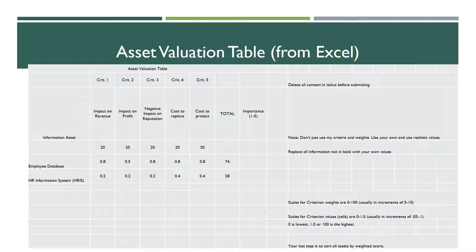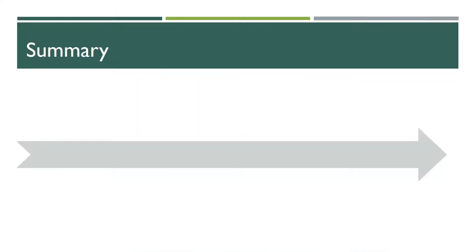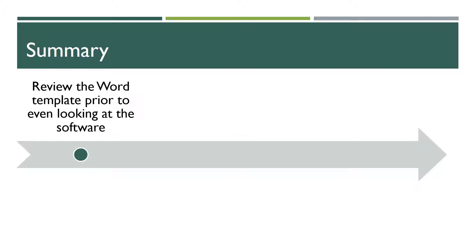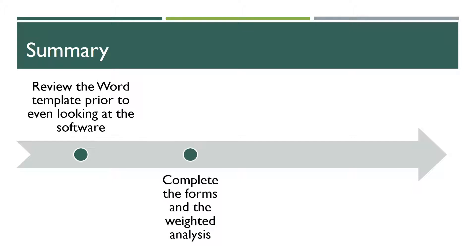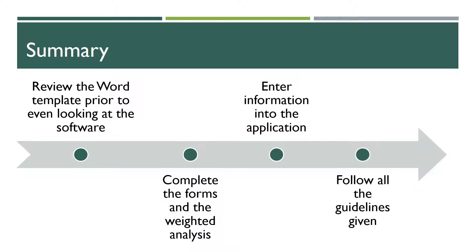The very last thing you will do is sort the table on the total column in descending order so that your most important information asset is at the top. There is a software tutorial that describes how you enter everything into the application. To summarize: review the Word template prior to even looking at the software, complete the forms and the weighted analysis, enter information into the application, and follow all the guidelines given.